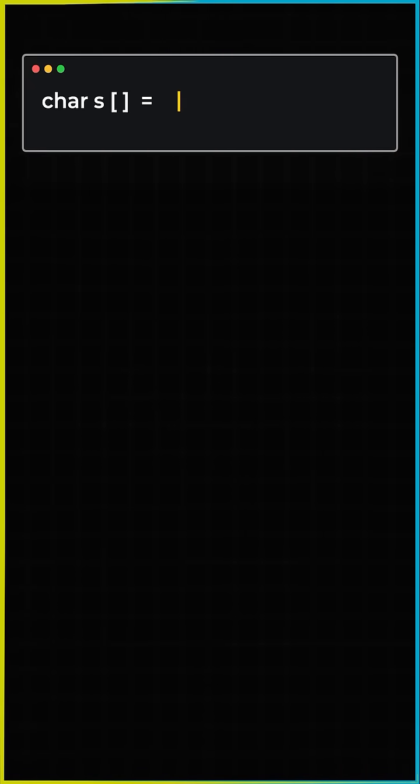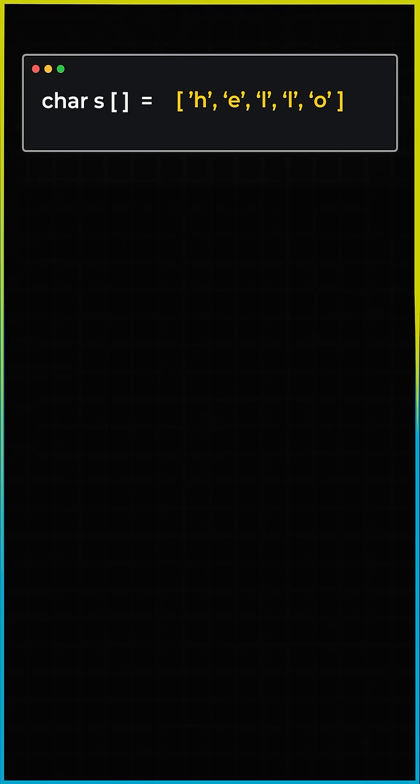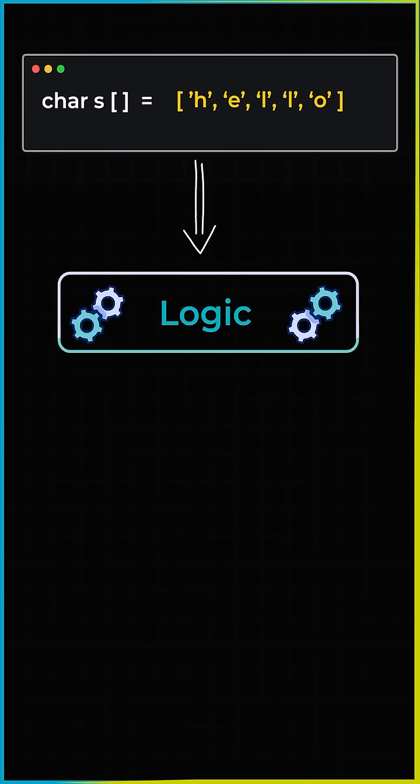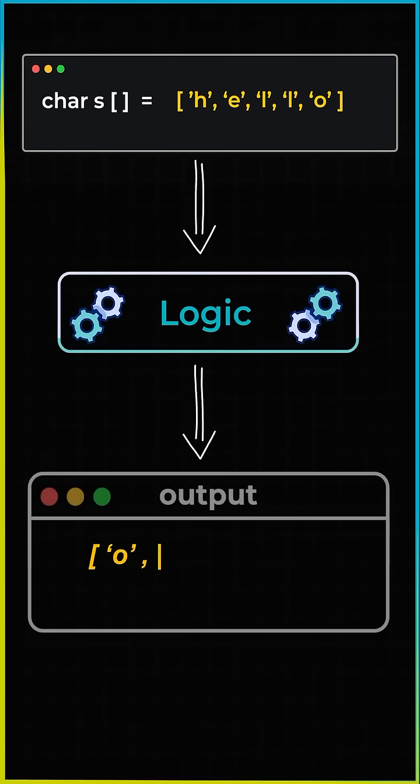Now suppose I have an array of character S which stores the value H, E, L, L and O and you want to build the logic in such a way that the output is in reverse order.